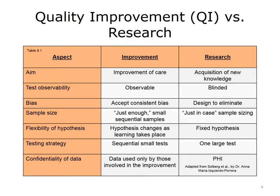It is important that a clear distinction is made regarding the use of data. When data are collected to improve care, the collection characteristics are different than when it is collected to advance research and expand our knowledge. When the aim of the data collection is to improve care, you use observable data, accept that there is a consistent bias, and collect just enough data to make a decision regarding the outcome of a test in a small and sequential manner.